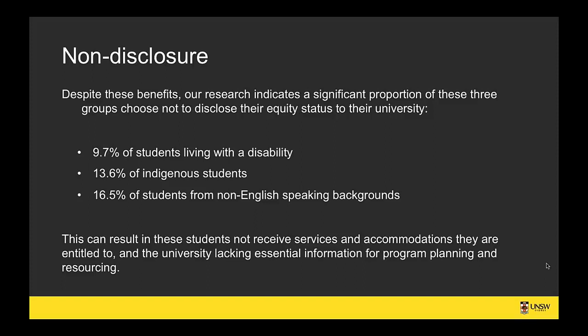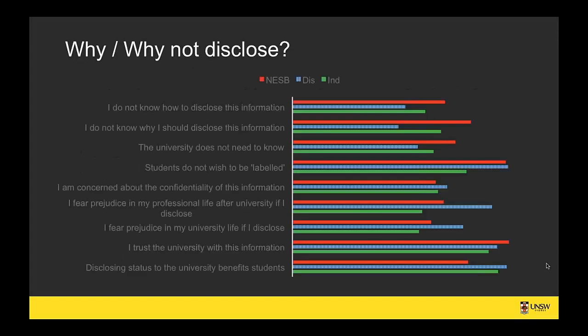This causes a lot of confusion for service provision and accommodation as well as funding, because there are simply gaps in how many students we know have these issues. We've identified reasons given by students in our surveys for why they may or may not disclose, which identifies differences between these groups. For instance, a huge proportion of non-English speaking background students don't know how to disclose, less so for students with disabilities, and less so for Indigenous students.